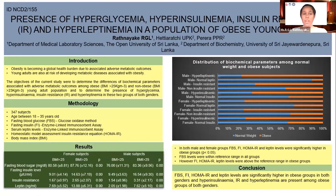The objective of my study was to determine the presence of these adverse metabolic outcomes — including hyperglycemia, hyperinsulinemia, insulin resistance, and hyperleptinemia — among a population of obese young adults, and how these parameters differ between the two groups.